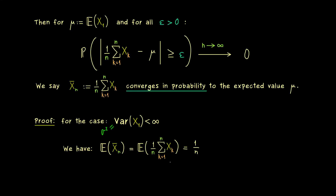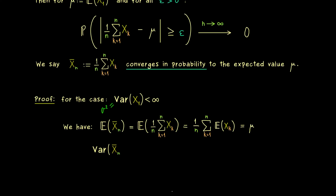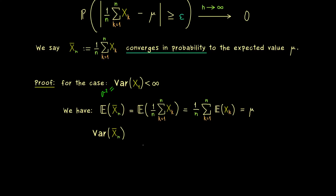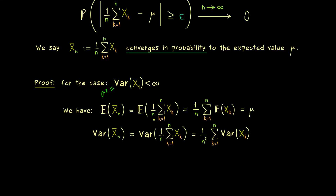Since the expectation is the same for every random variable, we have n times mu divided by n, so we get out the expected value mu again. The next question is what we can say about the variance of this new random variable. Using the properties of the variance — most importantly, pulling out a factor gives it squared, so we have 1/n² — and we can also pull out the sum because of the independence of the random variables. We therefore have the same number in the sum, namely sigma squared, and the result is sigma squared divided by n.